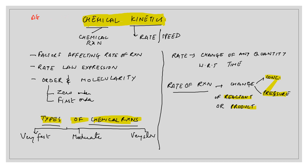In this chapter we will study the speed of the reaction, or you can say the branch of physical chemistry which deals with the rate of chemical reactions — that is called chemical kinetics. So chemical means chemical reaction and kinetics means rate or speed.